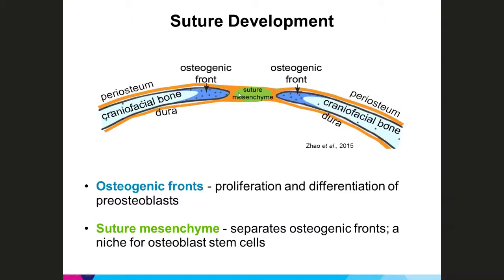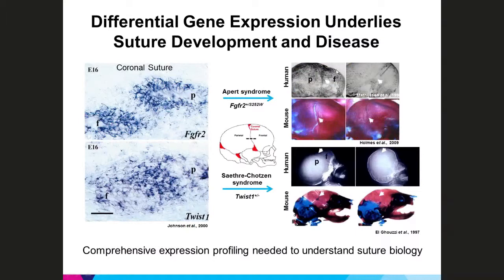Understanding suture gene expression at the sub-regional and single cell level is important because differential gene expression underlies normal suture development and craniofacial development. The coronal suture provides a good example. Looking at a drawing of the human embryonic skull, this red line shows the coronal suture between the frontal and parietal bones. The dotted line indicates the plane of section showing RNA expression in the mouse coronal suture at E16.